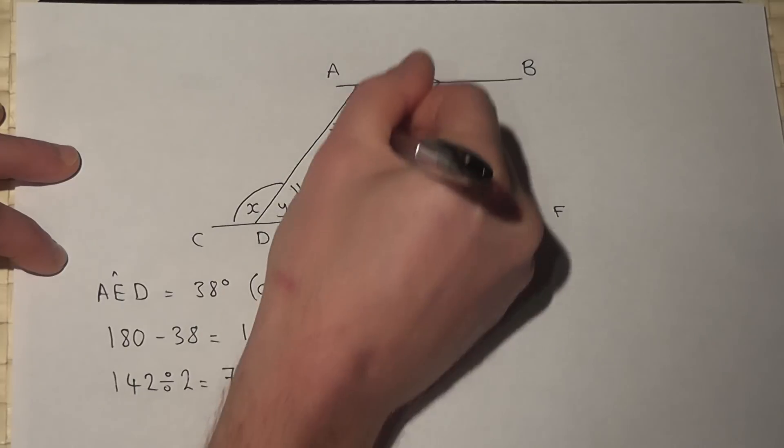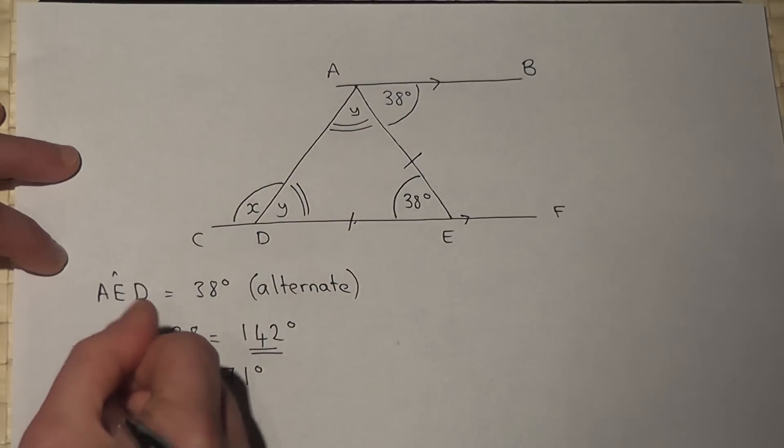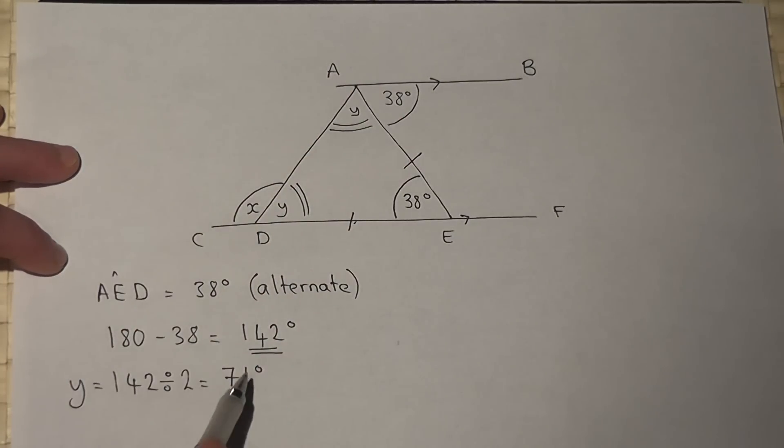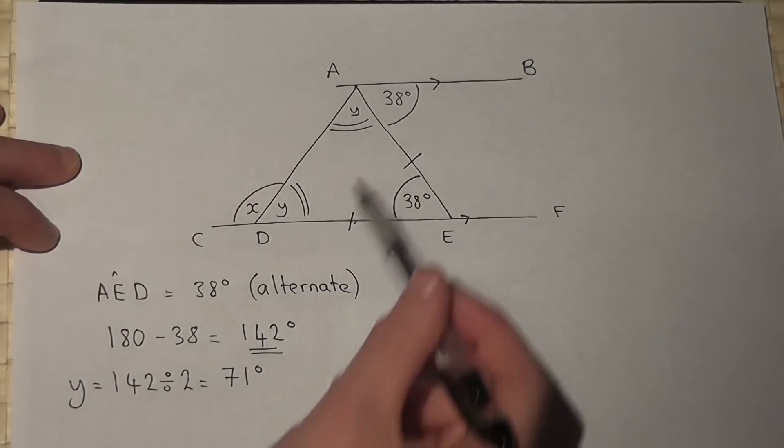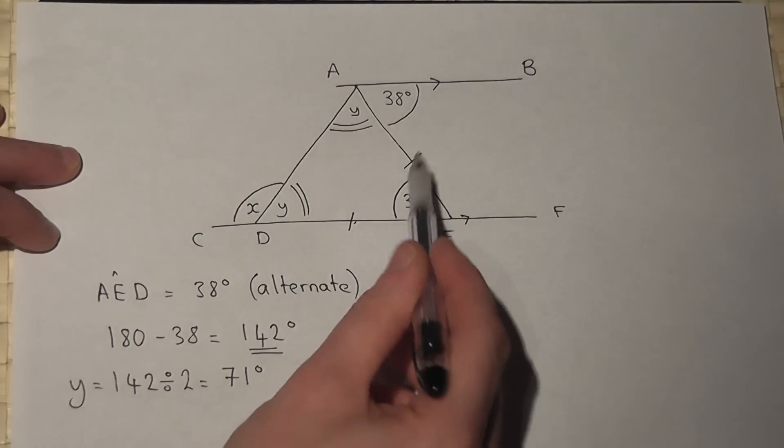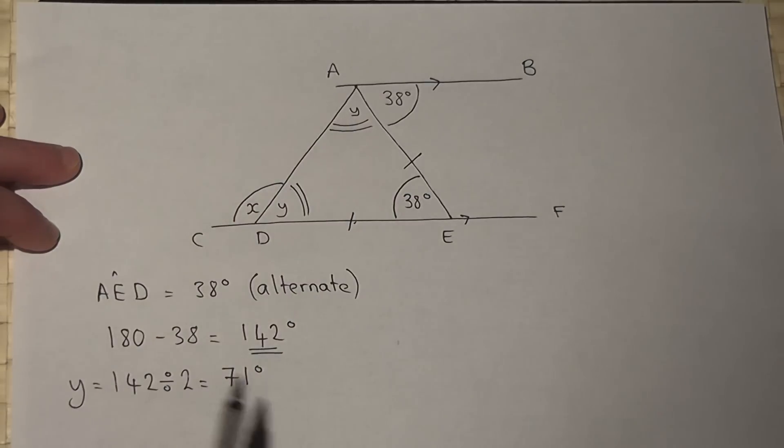So if I call these Y, then Y must equal 71 degrees. Again, I knew they were the same because these two dashes meant it was an isosceles triangle.